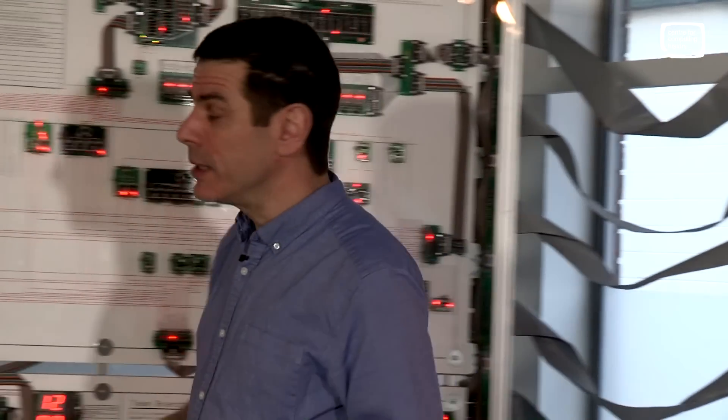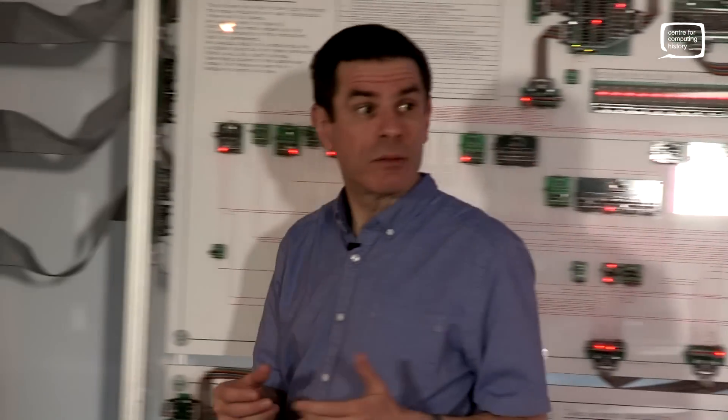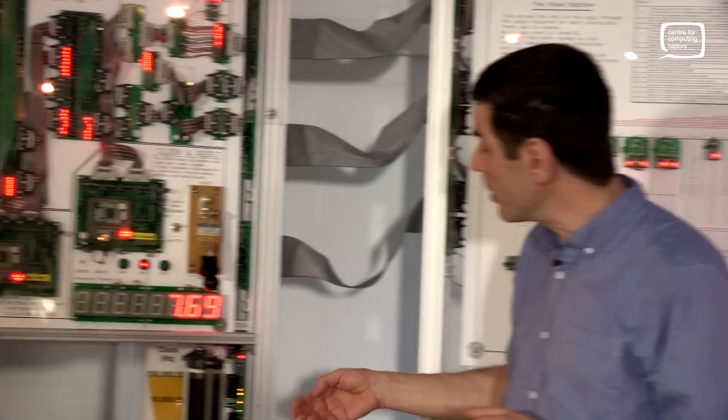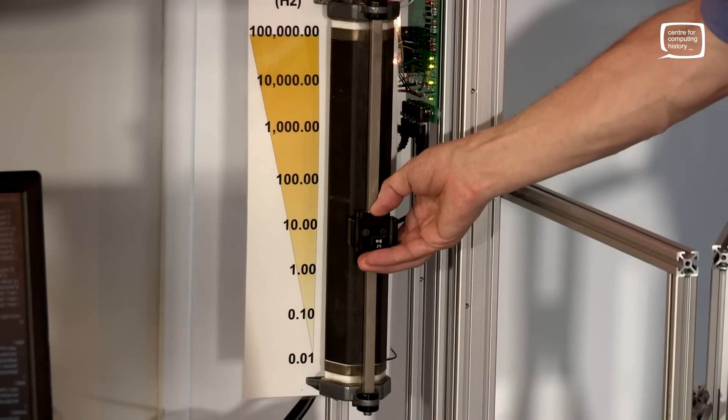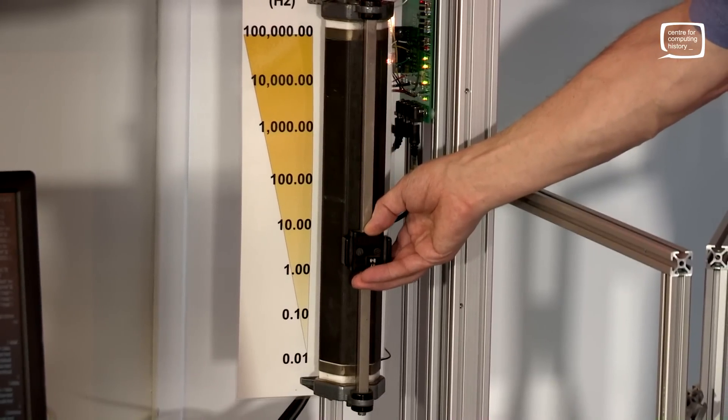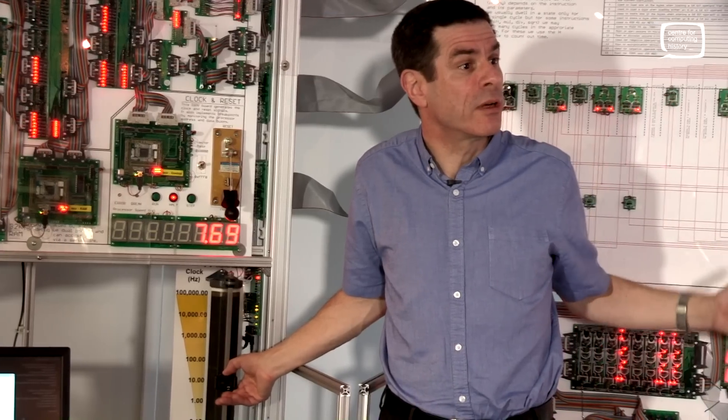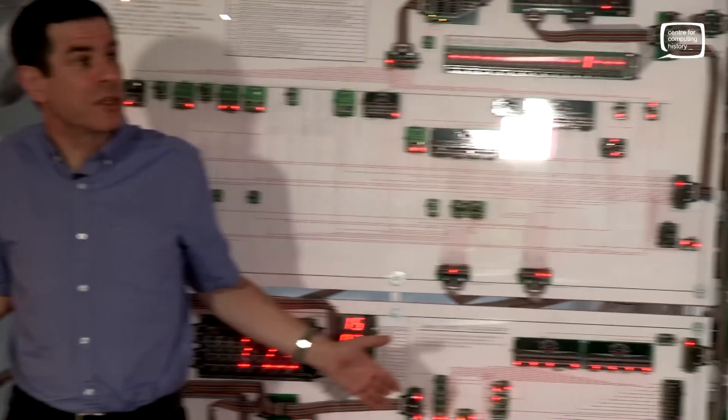So I mentioned that we can slow the processor down so we can see what's going on. We can do that over here. So this is different to most computers. Most computers just run at one speed, but on the Megaprocessor we can slow things down. So if you look at the way the lights are flashing, you'll see them slowing down as I do this.